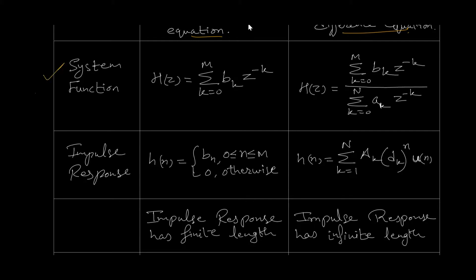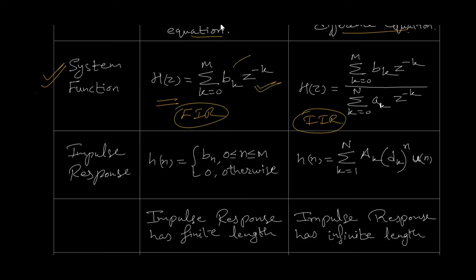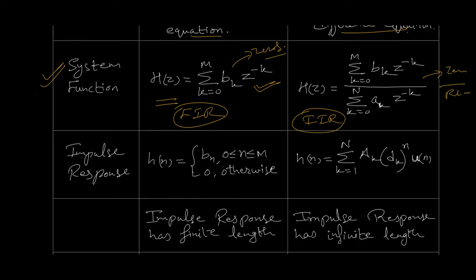Next we will compare the system function, or transfer function. Looking at the two system functions, for FIR filters we will be having only zeros, but for IIR filters both zeros and poles are available. That is the reason why IIR filters offer lots of flexibility in the types of systems that we can accomplish, whereas having only zeros is not that flexible.